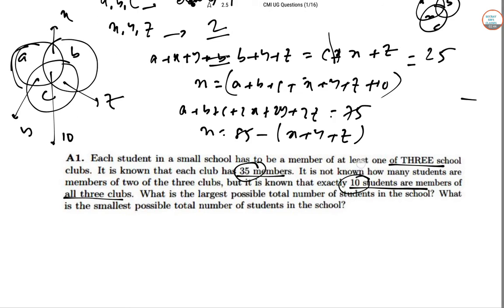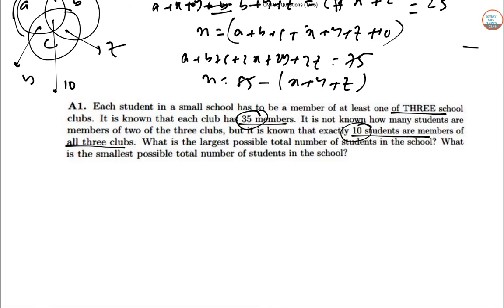So that gives N equal to 85 minus only comes down to this thing X plus Y plus Z. Now the maximum possible N cannot be more than 85. So N has to be less than 85. And it is achieved when X equal to Y equal to Z equal to 0 and A equal to B equal to C equal to 25.